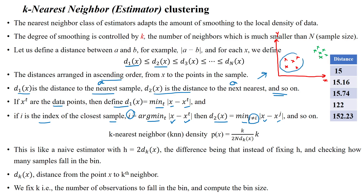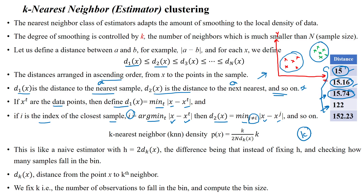When calculating distances, you arrange them in ascending order. The closest data point to x is the first neighbor, the second closest is the second neighbor, the third closest is the third neighbor, and so on. This way we can identify neighbor distances and select the k value — the number of neighbors — for a new data point x.